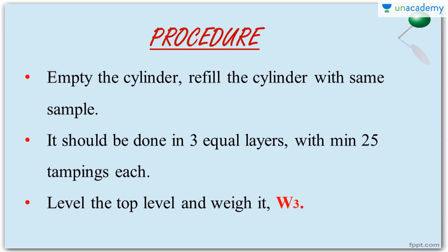Now empty the cylinder and fill it again with the same sample, this time in three equal layers, providing at least 25 tampings for each layer. The tamping rod should penetrate through both layers and reach the bottom of the cylinder. Once the cylinder is filled and enough compaction is provided, level the top surface and weigh the setup — that is the weight of the cylinder plus the weight of fully compacted concrete. Let that be W3.